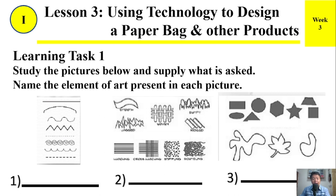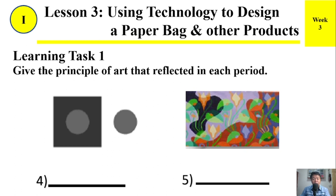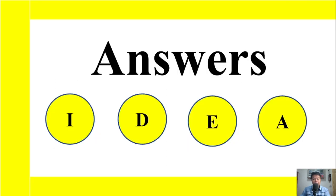Learning task number 1. Study the pictures below and supply what is asked. Name the element of art present in each picture — we have 3 images. Give the principles of art that are reflected in each picture — we have 2 images. Here are the answers.